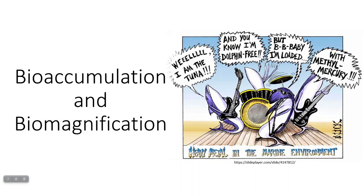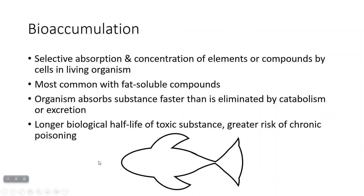Here are our final notes on bioaccumulation and biomagnification. Bioaccumulation is what happens when the amount of some pollutant or toxin becomes higher in organisms than it is in the surrounding environment. This is very common with persistent organic pollutants as well as things that are fat-soluble. The organism absorbs this stuff faster than it can eliminate it — either by breaking it down with enzymes in metabolism or by excreting it.